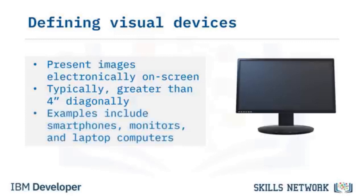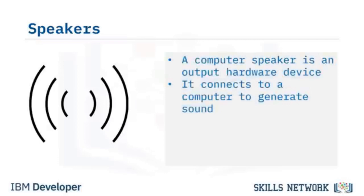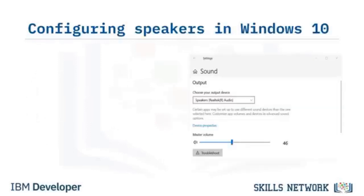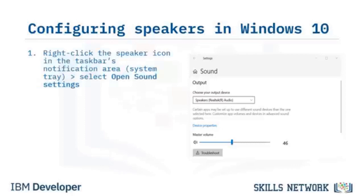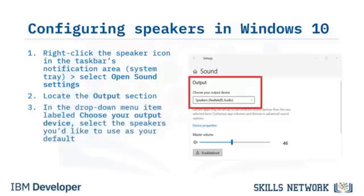A computer speaker is an output hardware device that connects to a computer to generate sound. The signal used to produce sound is created by the computer's sound card. To configure speakers in Windows 10, right-click the speaker icon in the taskbar's notification area and select Open Sound Settings. In the Output section, use the drop-down menu to select the speakers you'd like as your default.